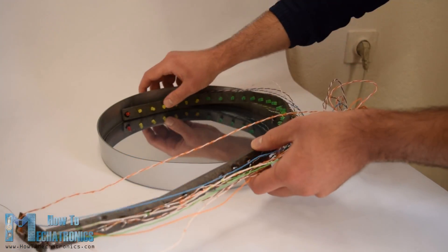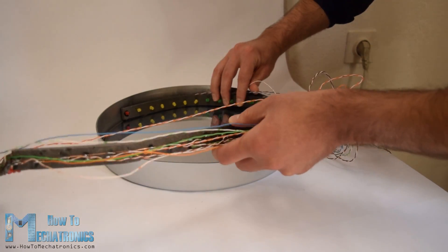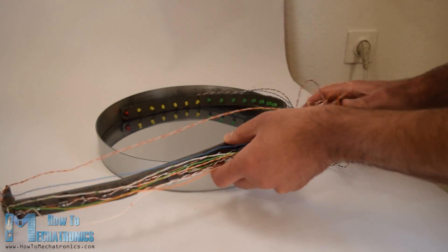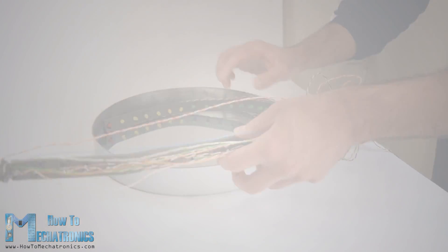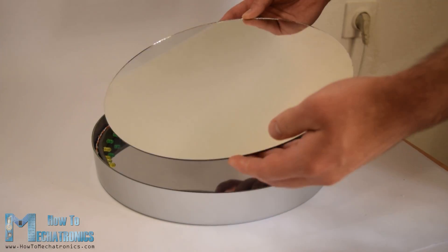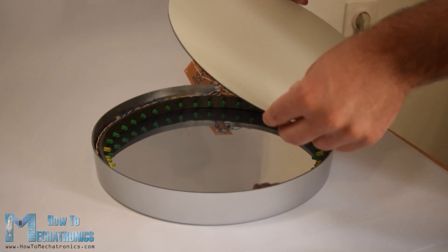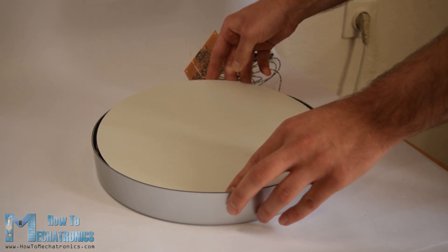Next we need to assemble everything together. So in the housing first goes the filmed glass and on top of it the styrofoam with the LEDs. Once they are secured in place on top of them goes the mirror which is also secured using a glue gun.